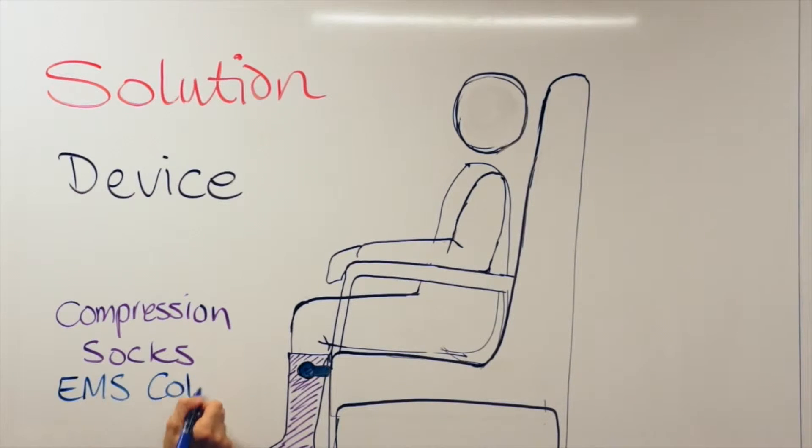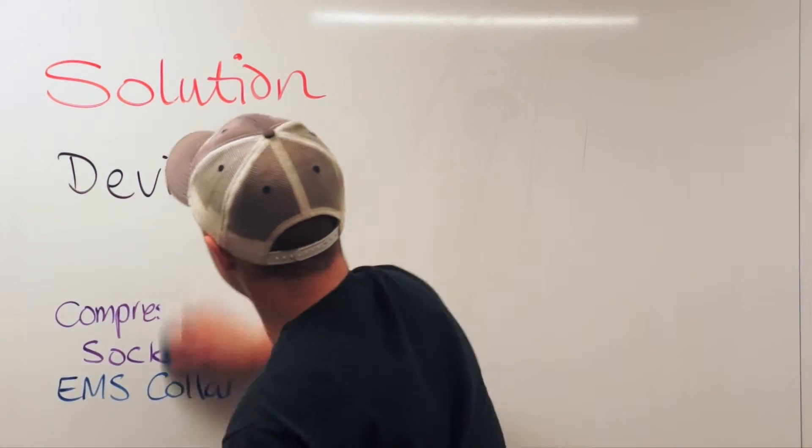The EMS collar actively promotes blood flow in the leg by stimulating muscle pulsations in the calf. Alignment marks integrated into the compression sock ensure proper placement of the electrodes onto the leg.